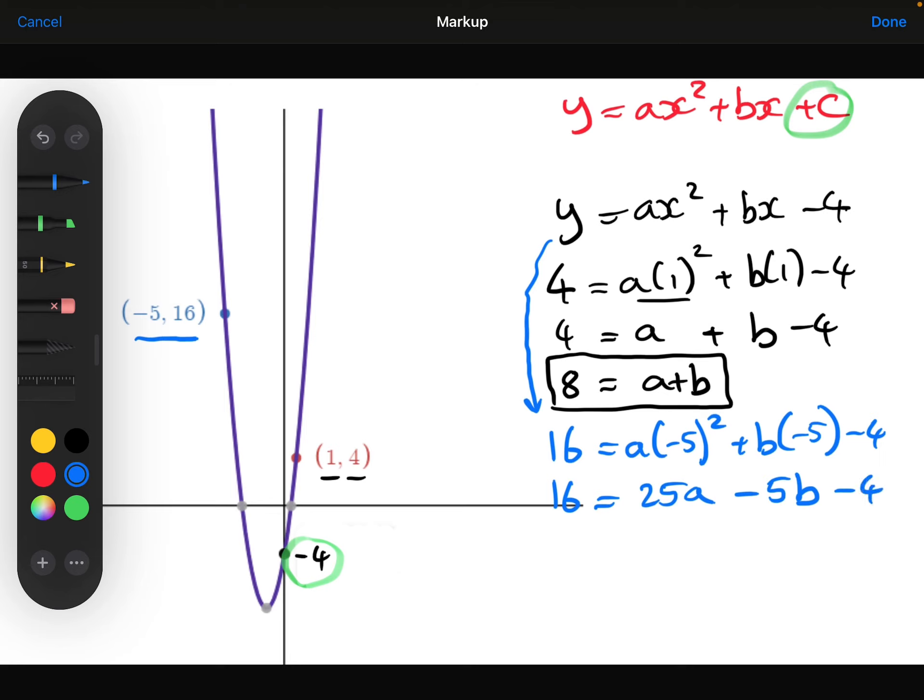And then I'll add 4 to both sides. So 20 equals 25a minus 5b. And then I notice that in this case, I can actually divide through by 5 just to make the numbers a little bit smaller and a little bit easier to deal with.